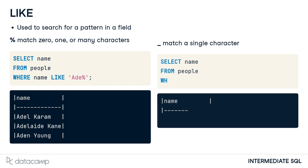The underscore wildcard will match a single character. For example, the query on the right matches only three-letter names like Eve. We'd also see names like Eva if it were in our dataset. Eva Mendez, however, would not be visible unless the search criteria looked like this.